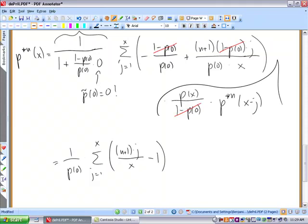The p of zero is in front of the sum, and then p of x times p star n of x minus j.